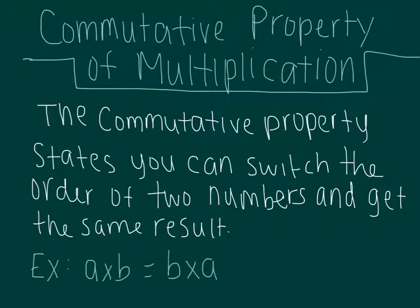We move on to our third and final property, the commutative property of multiplication. The commutative property states that you can switch the order of two numbers and get the same exact result. An example would be a times b is equal to b times a — all you're doing is switching the order.